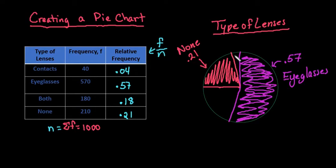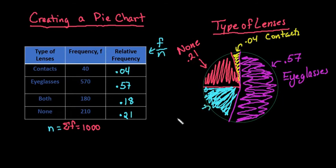This small sliver right here, that's 4%, is just contacts. And then the last piece that is 18%. Again, this is just a rough sketch. It's much better to do it with technology. It will shade it in and give you the exact measurements much more accurately than you can by eyeballing it. So this would be .18 and this is both.